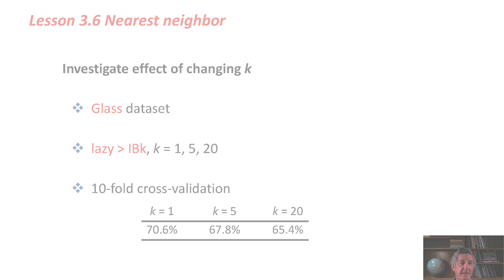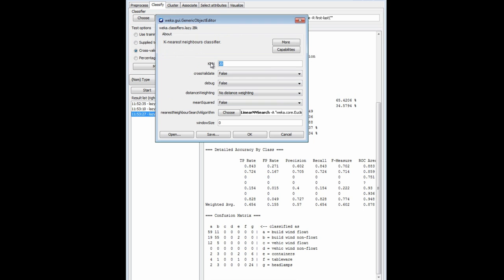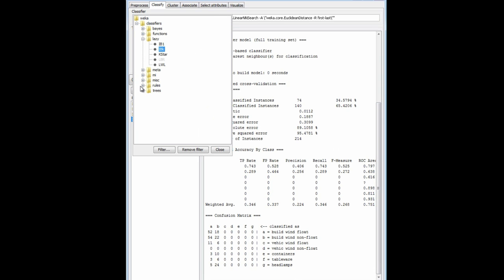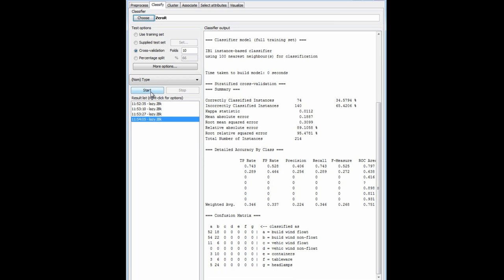Here, if I set k to be a ridiculous value like, say, 100, I'm going to take the 100 nearest instances and average their classes, we get an accuracy of 35%, which I think is pretty close to the baseline accuracy for this data set. Let me just find that out. With 0R, the baseline accuracy is, indeed, 35%.